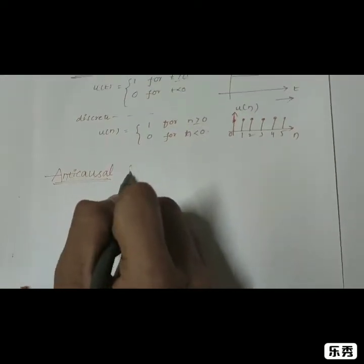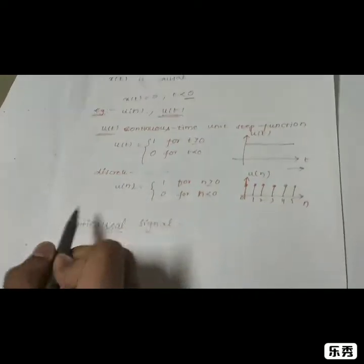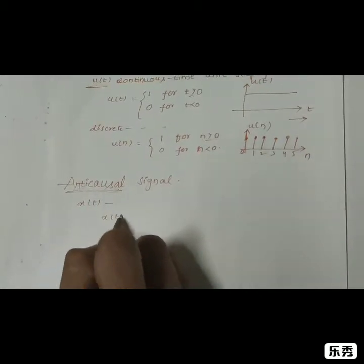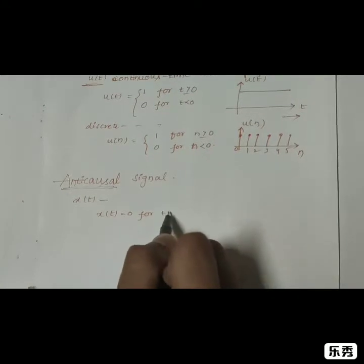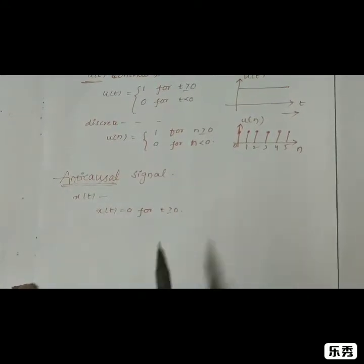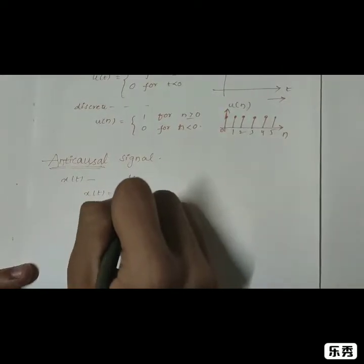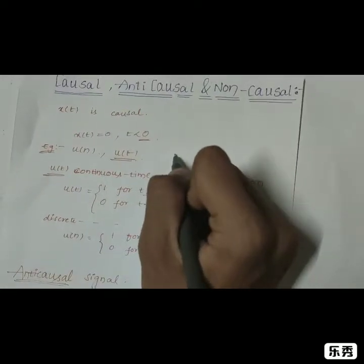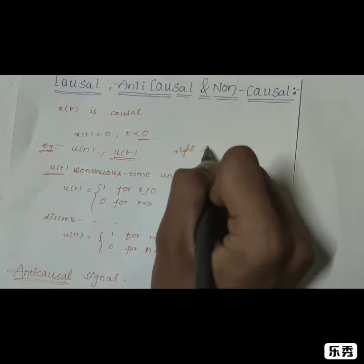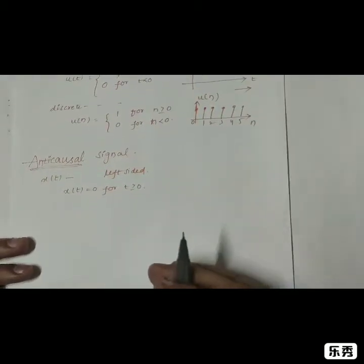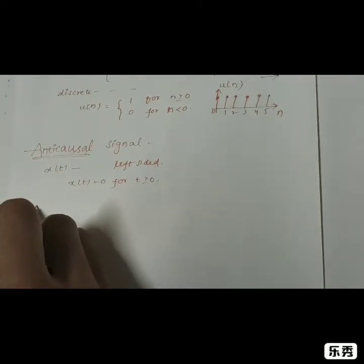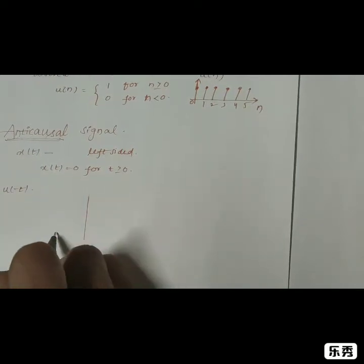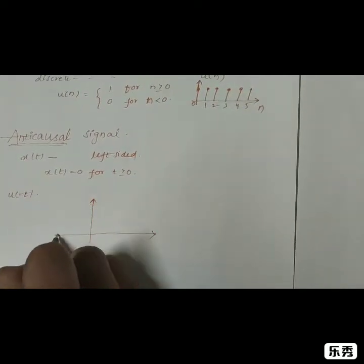Now, moving to the anti-causal signal. If x(t) is said to be an anti-causal signal, then x(t) equals 0 for t greater than or equal to 0. That means it is a totally left-sided signal, whereas a causal signal is a totally right-sided signal. An example is u(-n) or u(-t), which exists only for negative values of t.